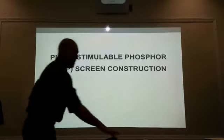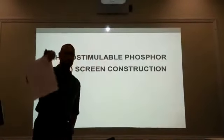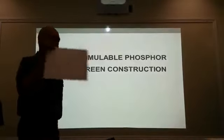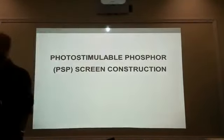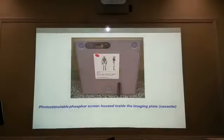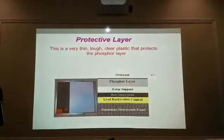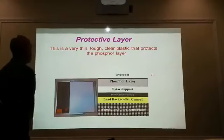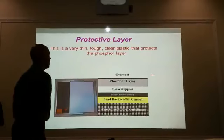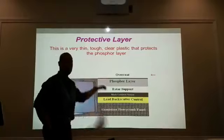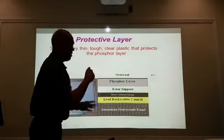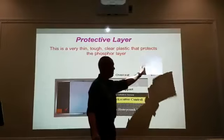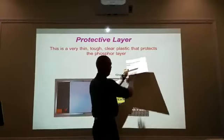Let's talk a little bit about the PSP screen, the photostimulable screen. Like film, it also comes in different layers. The first layer is the protective layer — a very thin, tough, clear plastic that protects the phosphor layer. This is just the very outside of it, and if you notice, there's a kind of a sheen to it, very shiny. The next layer is your active layer, which contains the phosphors.